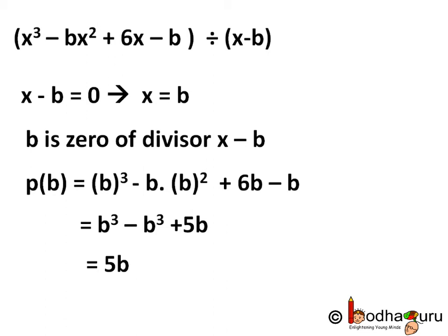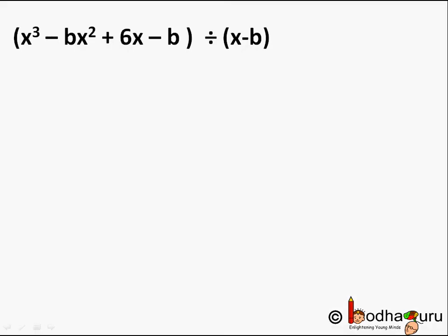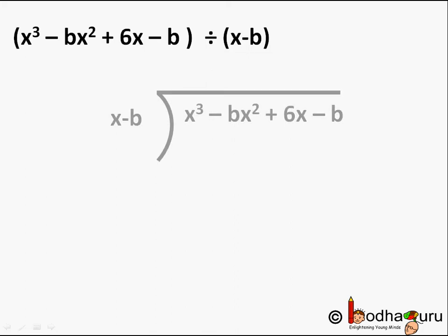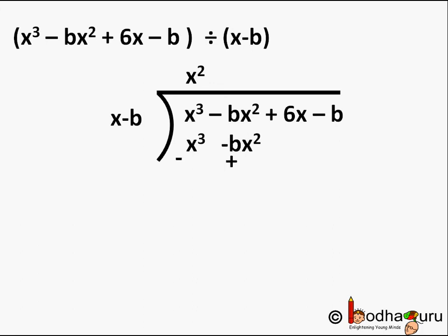Let us verify our answer by dividing x³ - bx² + 6x - b by x - b using the long division method, to check if it matches the remainder we got. We start the long division: the first term of the dividend x³ divided by the first term of the divisor x gives x². We multiply x - b by x² to get x³ - bx², write it below, and subtract. x³ - x³ cancel, and -bx² + bx² cancel, leaving a new dividend of 6x - b.